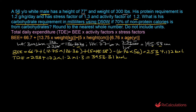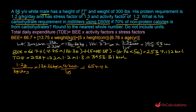Next, we determine the calories from protein. Starting with the protein requirement of 1.2 g/kg/day, we multiply by the patient's weight of 136.36 kg, then by the conversion factor of 4 kcal/g for protein. So: 1.2 × 136.36 × 4 = 654.4 kcal/day from protein.